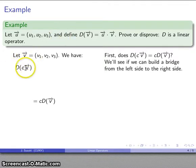Here's my starting point, here's where I'd like to get to. If I can build a bridge from this side to this side, then I have proven that we've preserved scalar multiplication. Conversely, if I can't build the bridge, if there's something that prevents me from getting here, then I know these two are not equal and I don't have a linear operator.